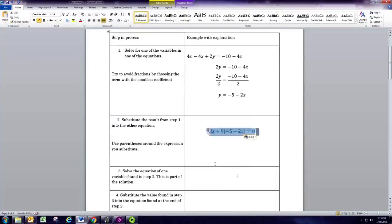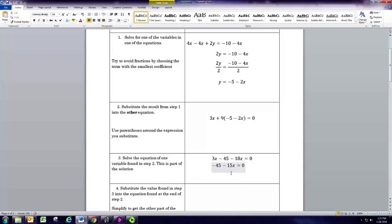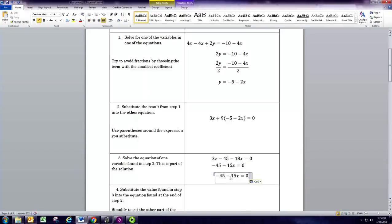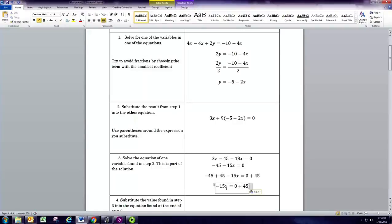Now you're going to solve this equation for x. All right, so we can distribute that 9 and get negative 45 and distribute the 9 to the negative 2x and get negative 18x. Negative 15x. Now let's go ahead and add 45 to both sides. So the 45 and negative 45 add to 0 and you'll just have negative 15x on the left and 0 plus 45 is 45.